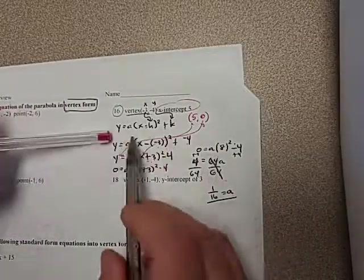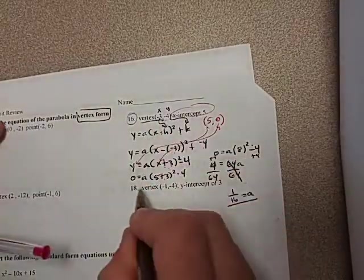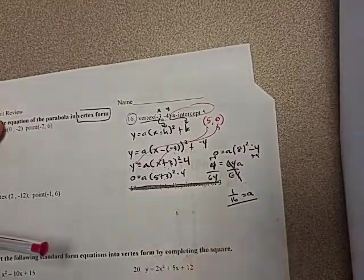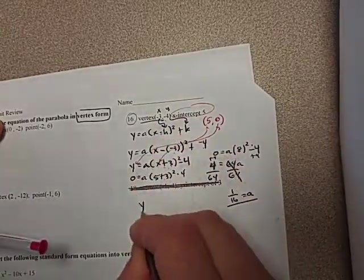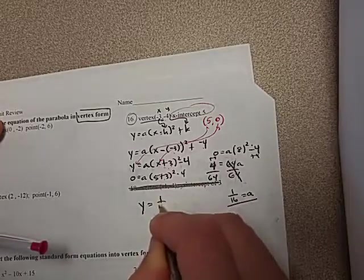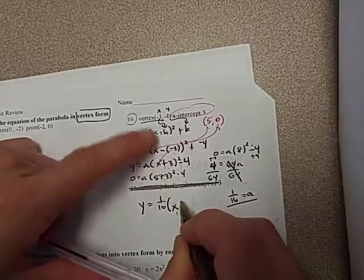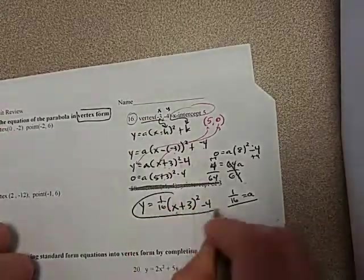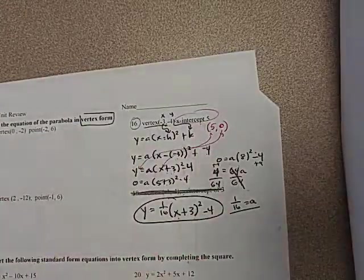So the a value that I need to put here is just 1 over 16. So the equation is going to be y equals my a value, 1 over 16, times x plus 3 squared. Remember that the minus 3 became a plus 3, and then minus 4. So this is the vertex form for this parabola right here.